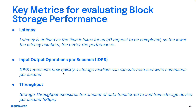When evaluating the performance of block storage, three key metrics come to mind: latency, input/output operations per second (IOPS), and throughput. Latency is defined as the time it takes for an IO request to be completed — the lower the latency, the better the performance. IOPS represents how quickly a storage medium can execute read and write commands per second. Throughput tells you the amount of data transferred to and from a storage device per unit of time, typically measured in megabytes per second.